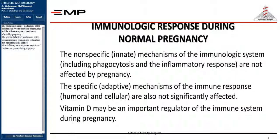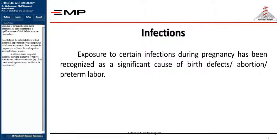The nonspecific, innate mechanisms of the immunologic system, including phagocytosis and the inflammatory response, are not affected by pregnancy. The specific, adaptive mechanisms of the immune response — humoral and cellular — are also not significantly affected. Vitamin D may be an important regulator of the immune system during pregnancy. Exposure to certain infections during pregnancy has been recognized as a significant cause of birth defects, abortion, and preterm labor. Knowledge of the potential effects of fetal infection is important for counseling patients with known exposures to these pathogens in pregnancy, as well as in the workup of an abnormal fetus or neonate.